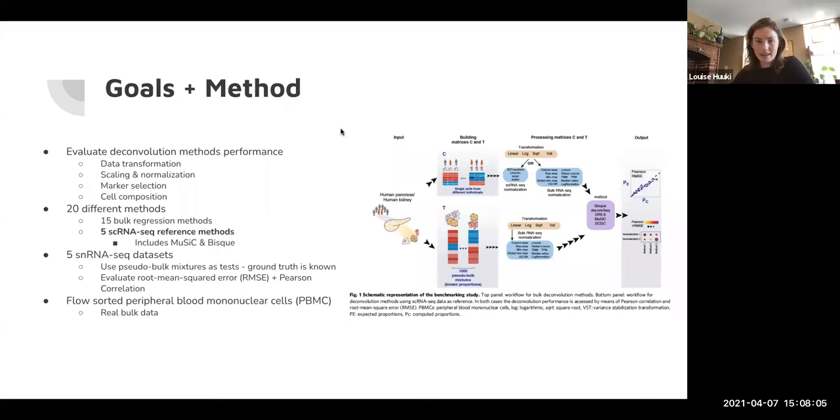So the goals and methods of this paper: we want to compare different deconvolution methods and how their results and accuracy change as we transform the data in different ways. We do different scaling and normalization techniques, different marker selections, and different cell compositions in the reference data. They compare 20 different methods. They use 15 methods that use just the bulk data and five different single cell RNA-seq reference methods, which is the realm we've been working in. That includes music and BISC, which I've been working with quite a bit.